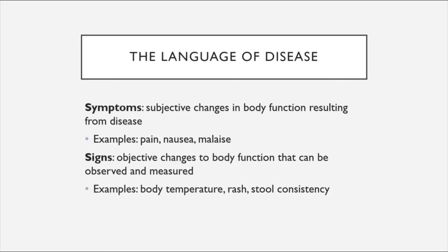As we move forward, we are going to be talking a lot about infectious diseases of the various body systems. The language of disease we'll be using involves two related but distinct terms: symptoms and signs. Symptoms are defined as subjective changes to body function resulting from disease — things that can be felt and experienced but not necessarily measured. For example, pain, nausea, and malaise are all examples of symptoms.